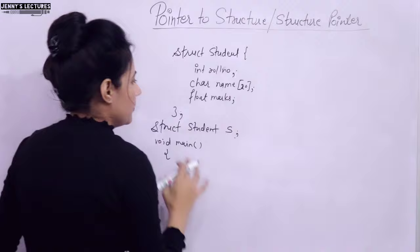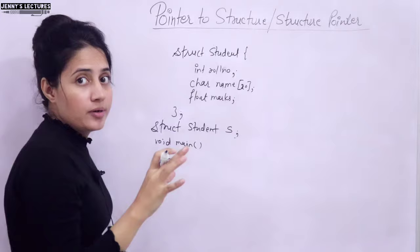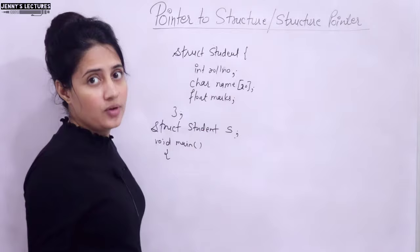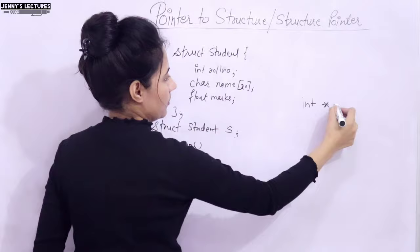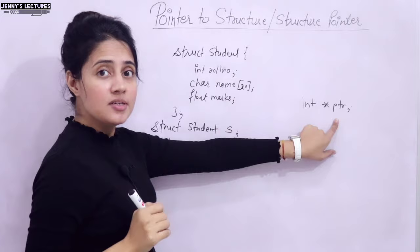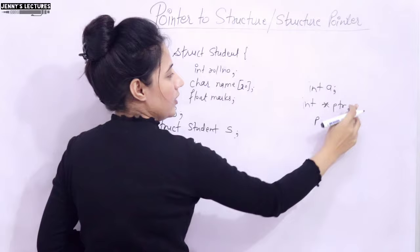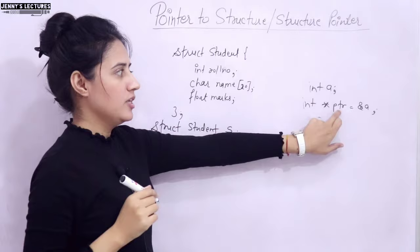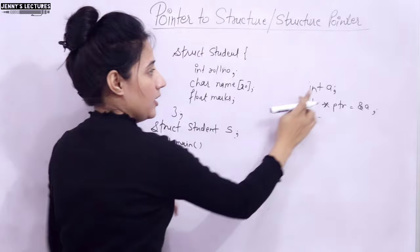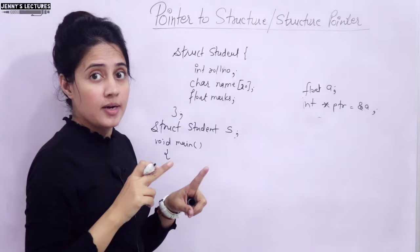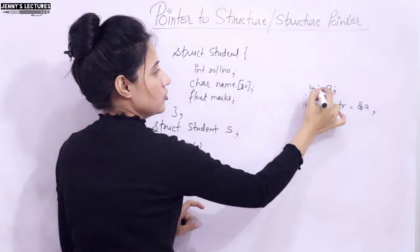Now, what is a pointer to structure? Here I'm taking a pointer. A pointer is a special variable which contains the address of another variable. For example, 'int *ptr' is a pointer that will contain the address of a variable whose data type is int. The data type of the pointer and the variable it points to must match. If you have a float variable, assigning it to an int pointer would be illegal.